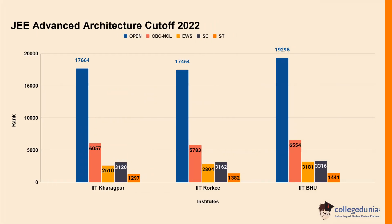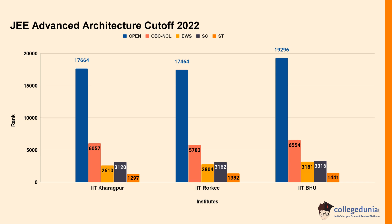Let's check the JEE Advanced Architecture cut-off 2022. For IIT Kharagpur, the cut-off rank was 17664 for Open category, 6057 for OBC-NCL, 2610 for EWS, 3120 for SC, and 1297 for ST.